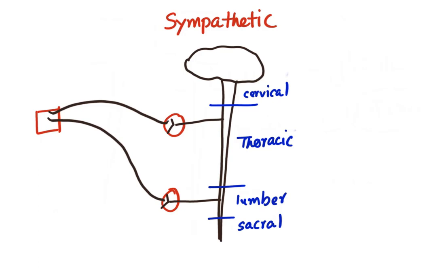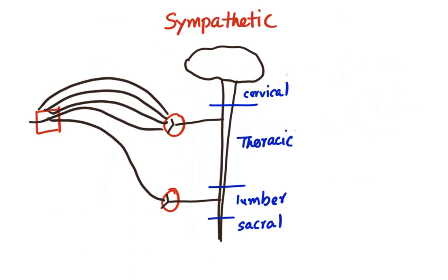One pre-ganglionic fiber communicates with numerous post-ganglionic fibers. One important feature of the sympathetic nervous system is that some pre-ganglionic fibers also communicate with the adrenal medulla.